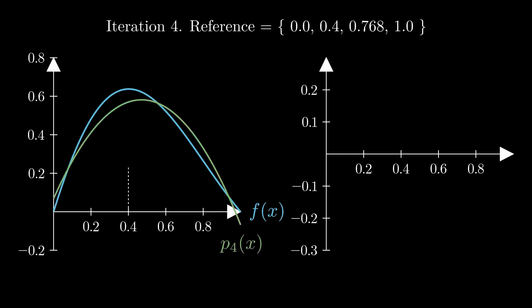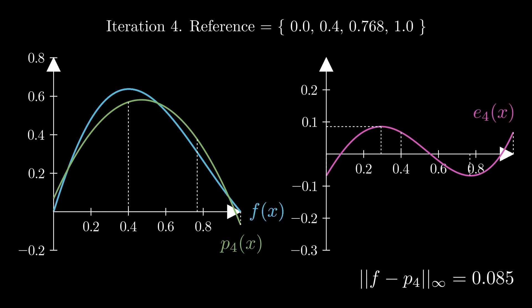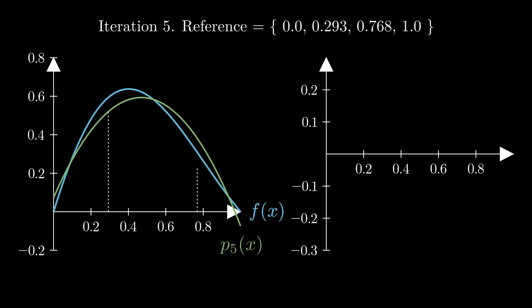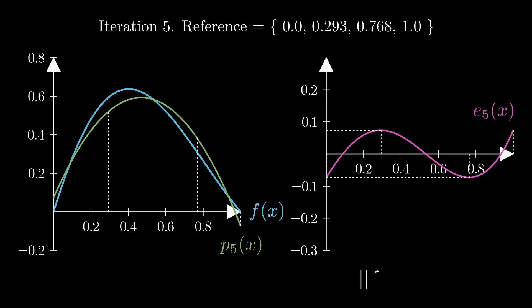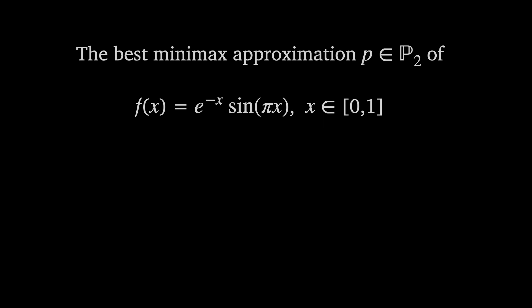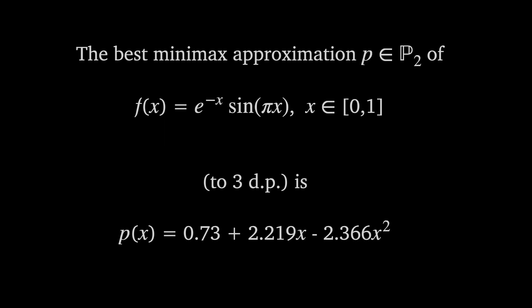In iteration 4, the maximum error occurs at 0.293 and is positive, so we exchange with 0.4. By iteration 5, maxima occur simultaneously on points already in the reference — meaning we've found the best approximation and further iterations won't improve it. The best minimax approximation from P₂ to f(x) = e^(-x) sin(πx) on [0, 1], to three decimal places, is 0.73 + 2.219x - 2.366x².